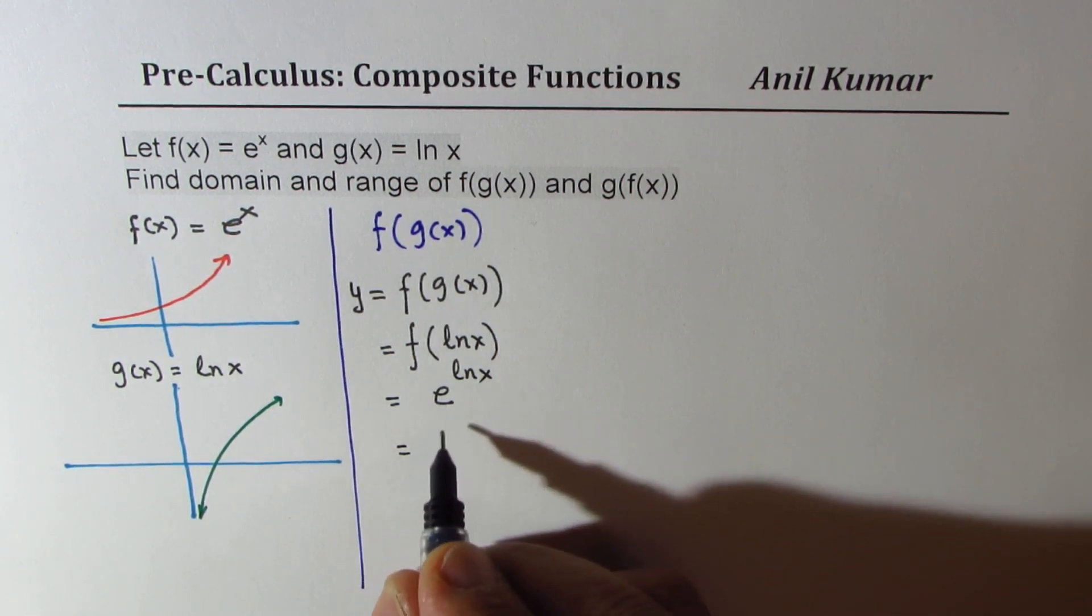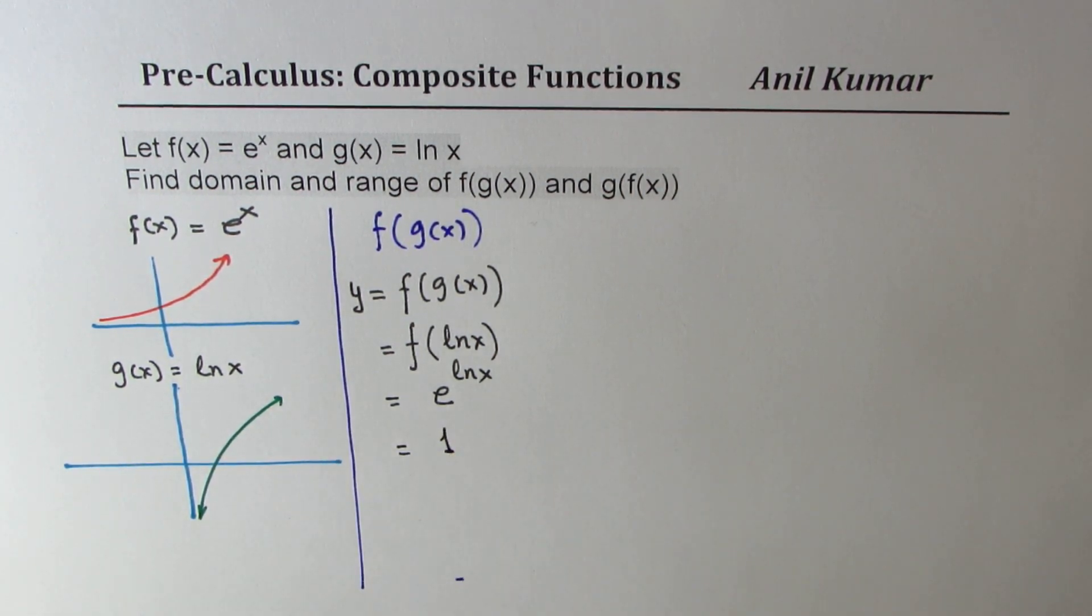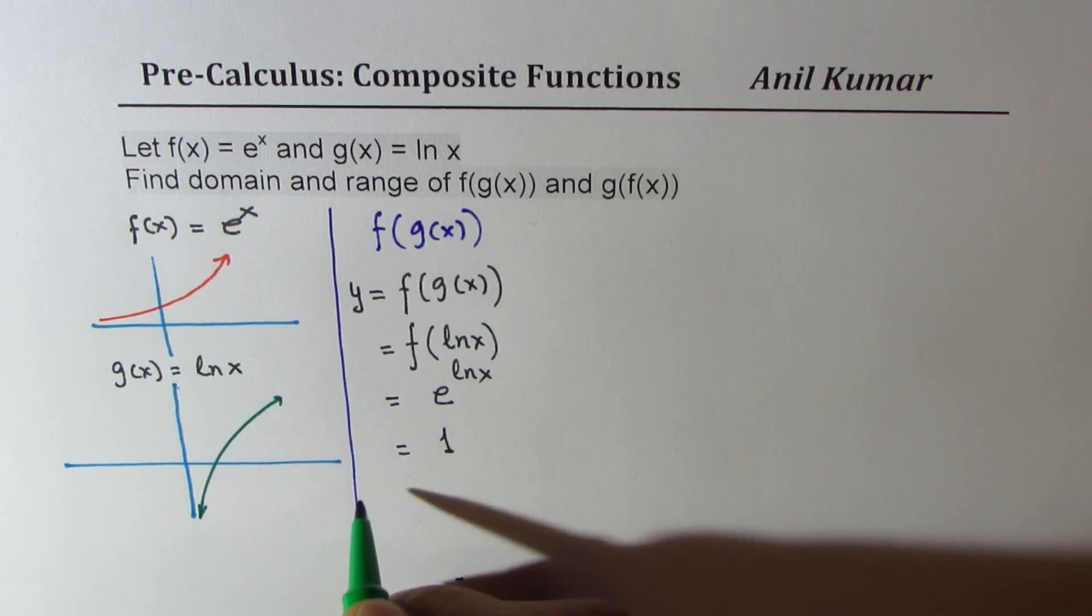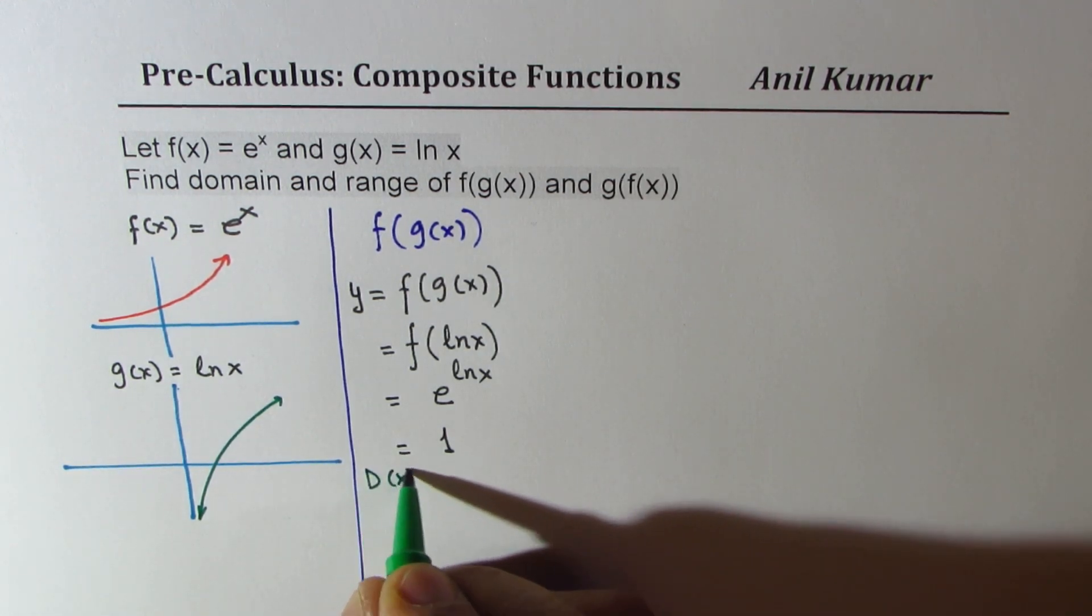Well that gives me, since they are inverse of one another, that gives me x. Now let's look into the domain of this particular thing. As far as the domain is concerned, let's write D(x) for domain.